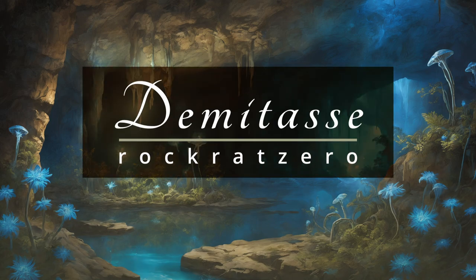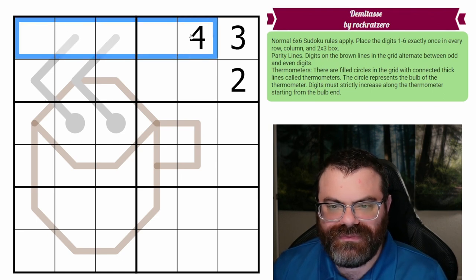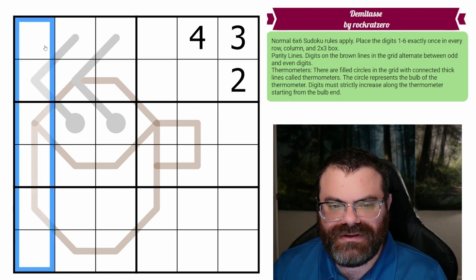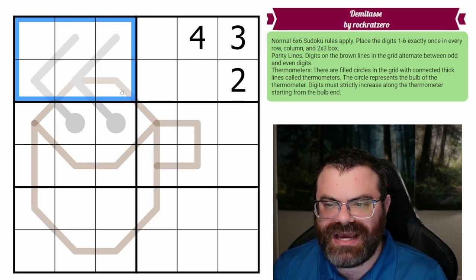Hello, let's continue our Sudoku adventure with DemiToss by RackRat0. We have normal 6x6 Sudoku rules, which means in every row, every column, and every 2x3 box, we are placing the digits 1 to 6 exactly once each.